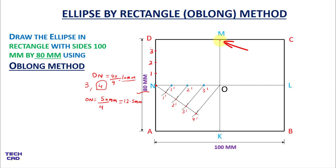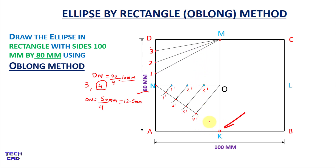Now from point M, I will make lines towards divisions 1, 2, and 3. From point K, I will make a line towards 1′, extended to meet the M-1 line.